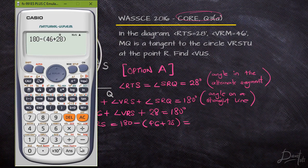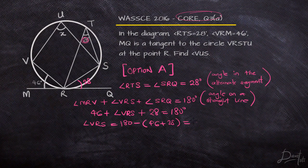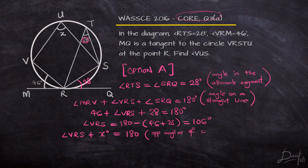Now, angle VRS that we just found, and the angle x we are looking for, are opposite angles of a cyclic quadrilateral. We know that opposite angles of a cyclic quadrilateral are supplementary.